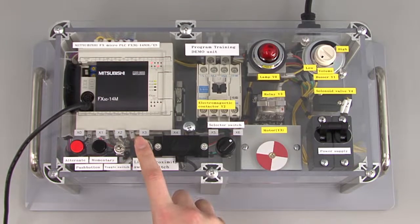Next, turn on the limit switch x3, which is the exit sensor. The red lamp will turn off and the motor will stop.